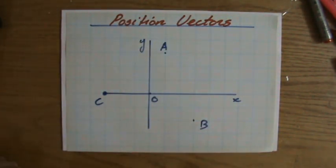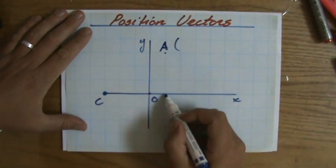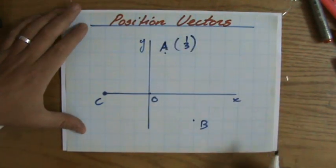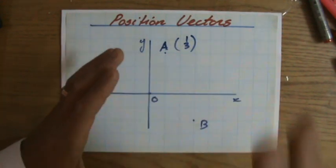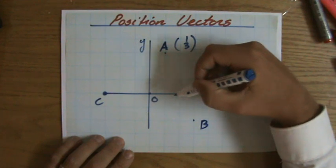Well, the position vector of A relative to the origin is one, three. One horizontally and then three up. The position vector of B relative to the origin is one, two, three and minus two.